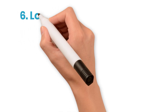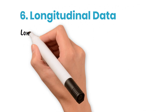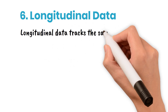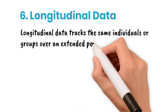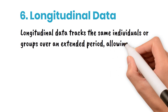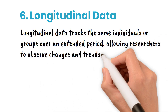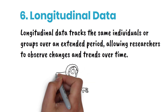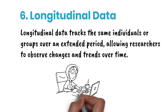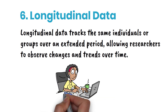Number six: longitudinal data. Longitudinal data tracks the same individuals or groups over an extended period, allowing researchers to observe changes and trends over time. For example, a psychologist studying child development might follow a cohort of children from birth to adulthood, regularly assessing their cognitive abilities, social skills, and emotional well-being.